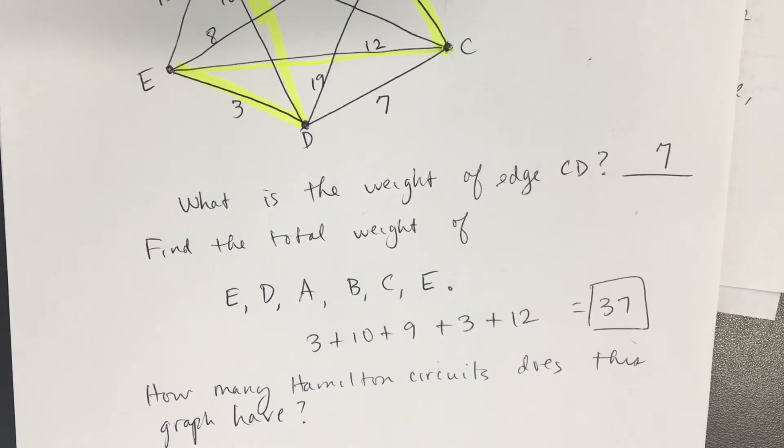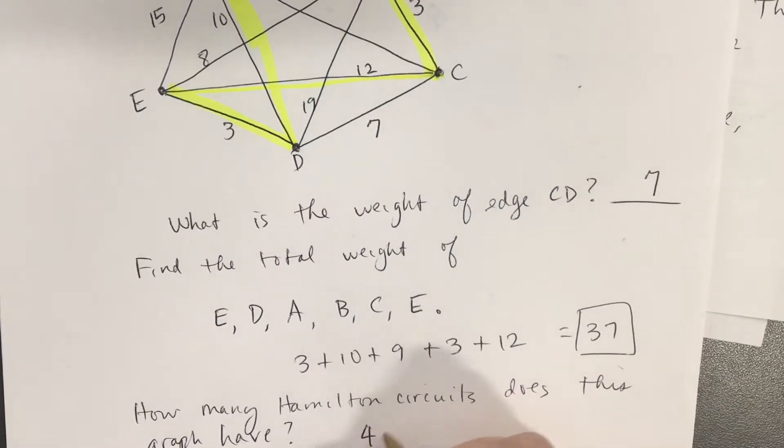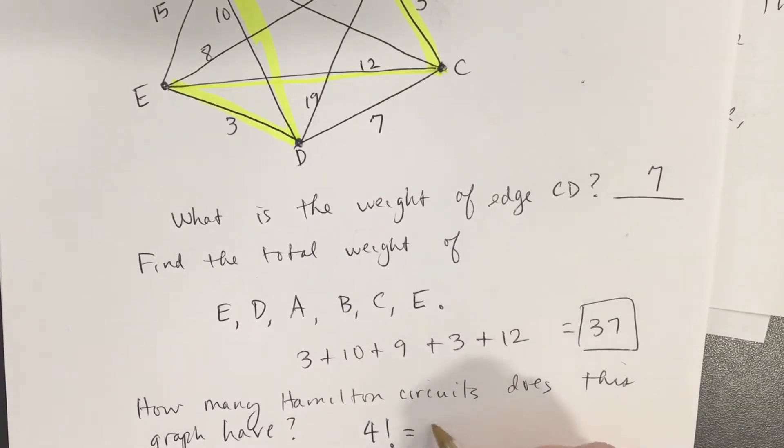Five vertices, so five minus one is four. Four factorial, which is four times three times two times one, that's 24.